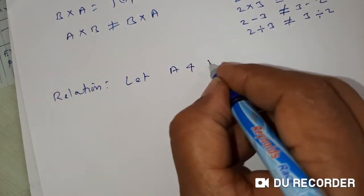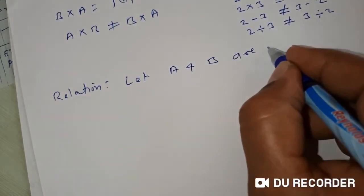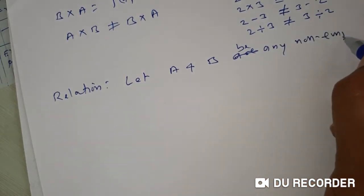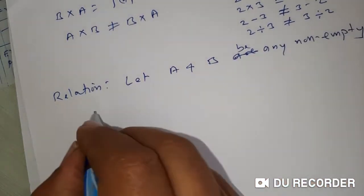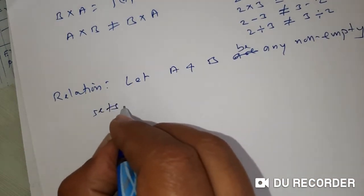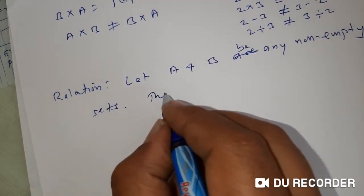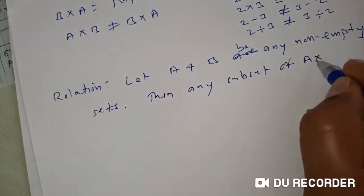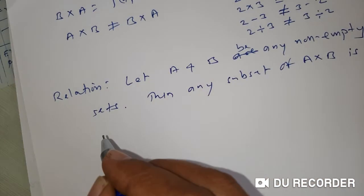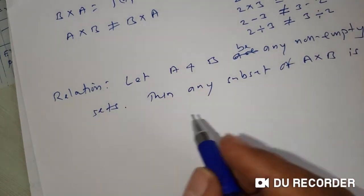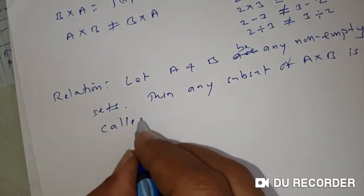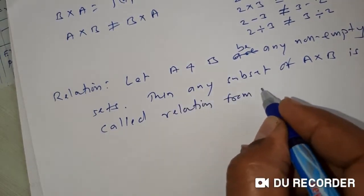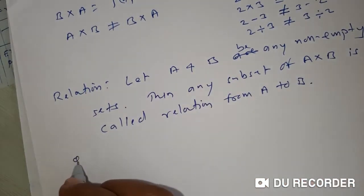Let A and B be any two non-empty sets. Then any subset of A cross B is called a relation from A to B.